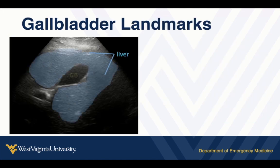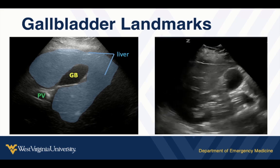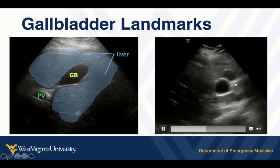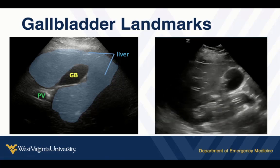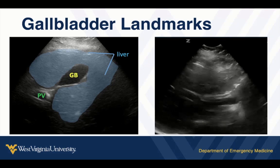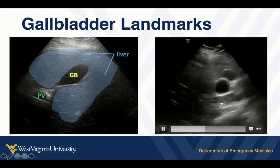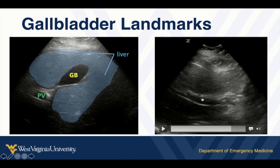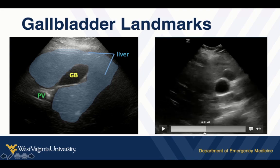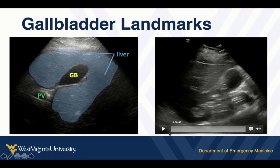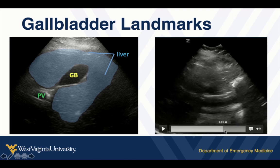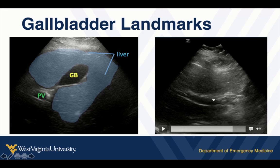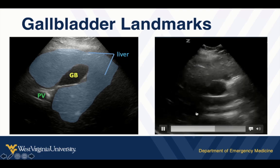Key landmarks: liver, gallbladder, portal vein. In this real-time scan we see the gallbladder — notice it has a fold, so you really want to scan all the way through because you could see a fold and think that's the fundus, but it's not. As we follow down towards the neck, we can see the portal vein. The common duct and hepatic artery run with the portal vein. If we fan through it completely and nothing else is dilated, the common bile duct is normal. Sometimes the kidney peeks in as well.